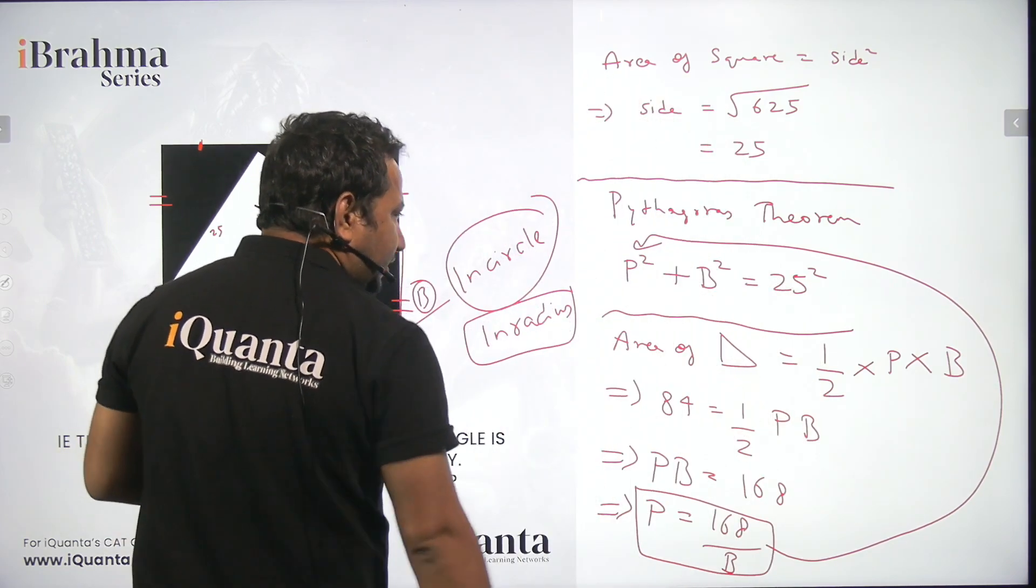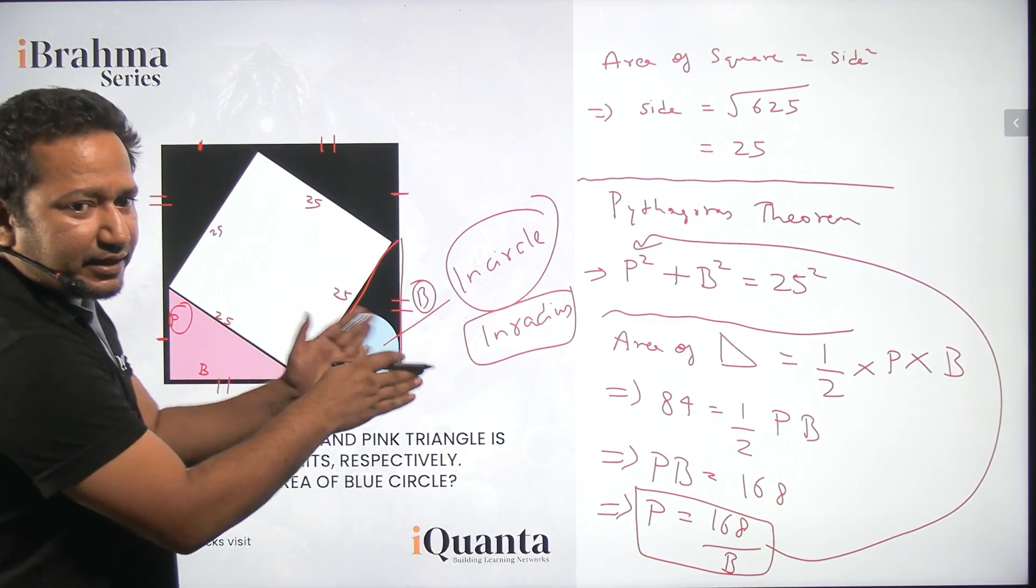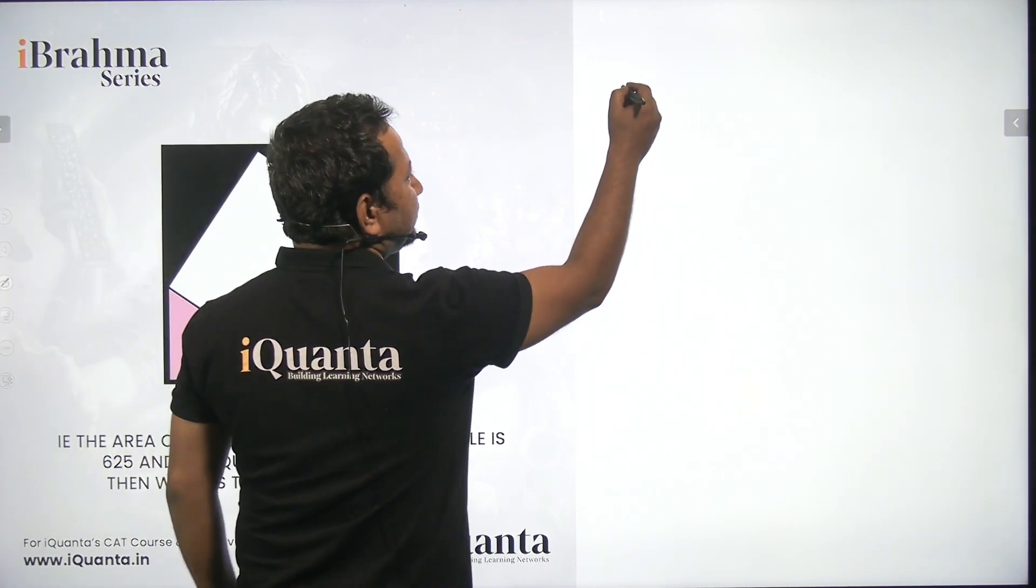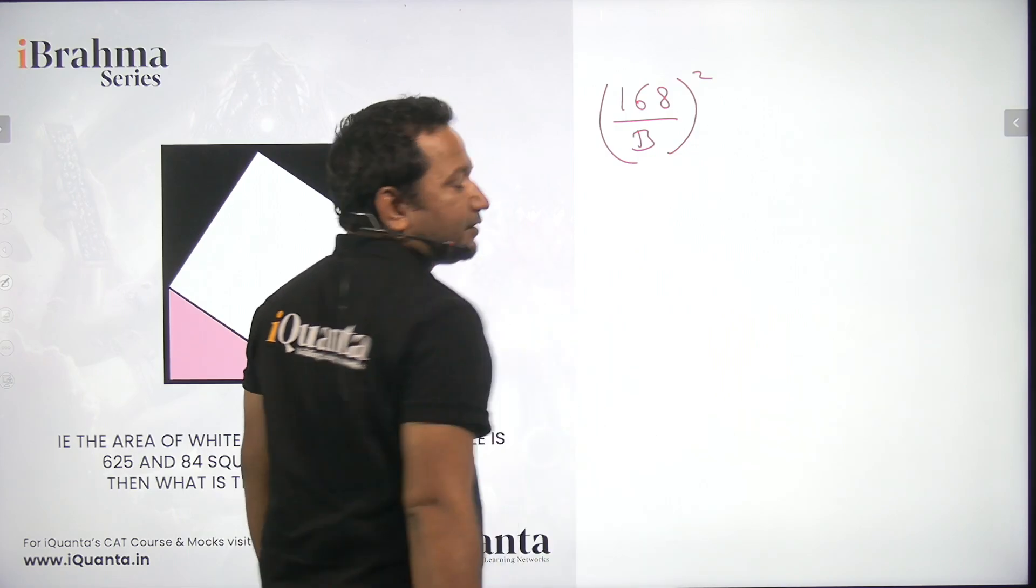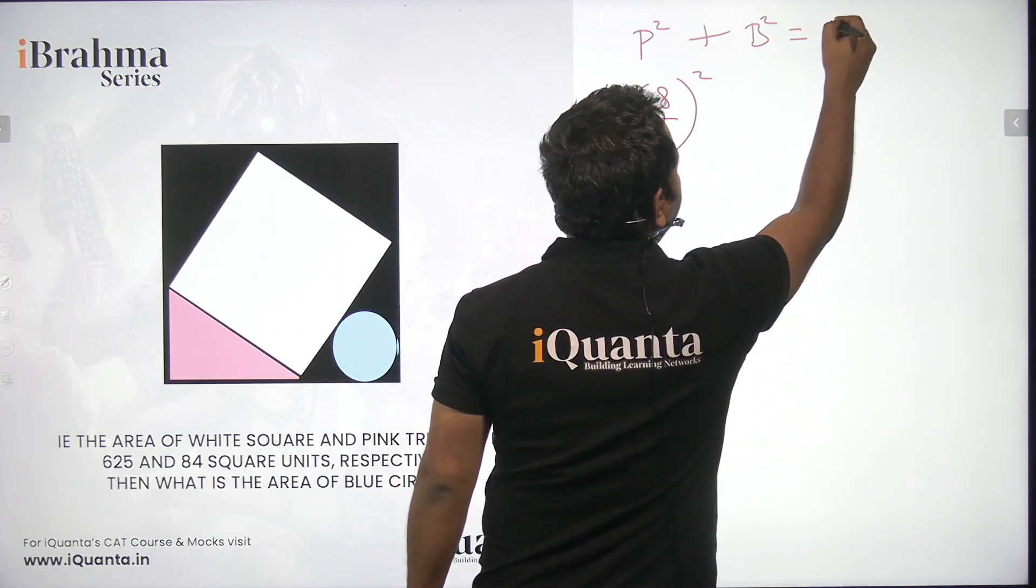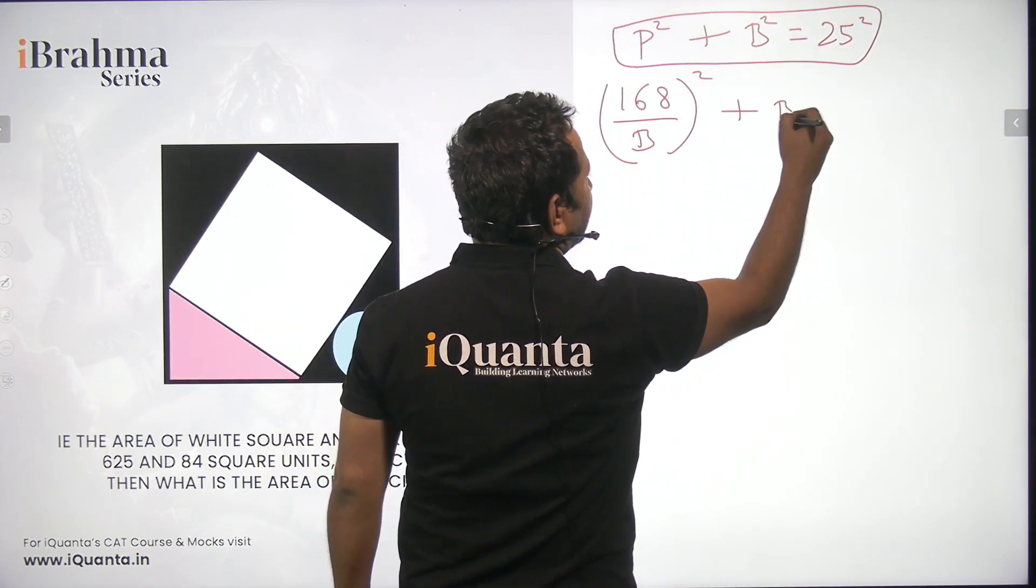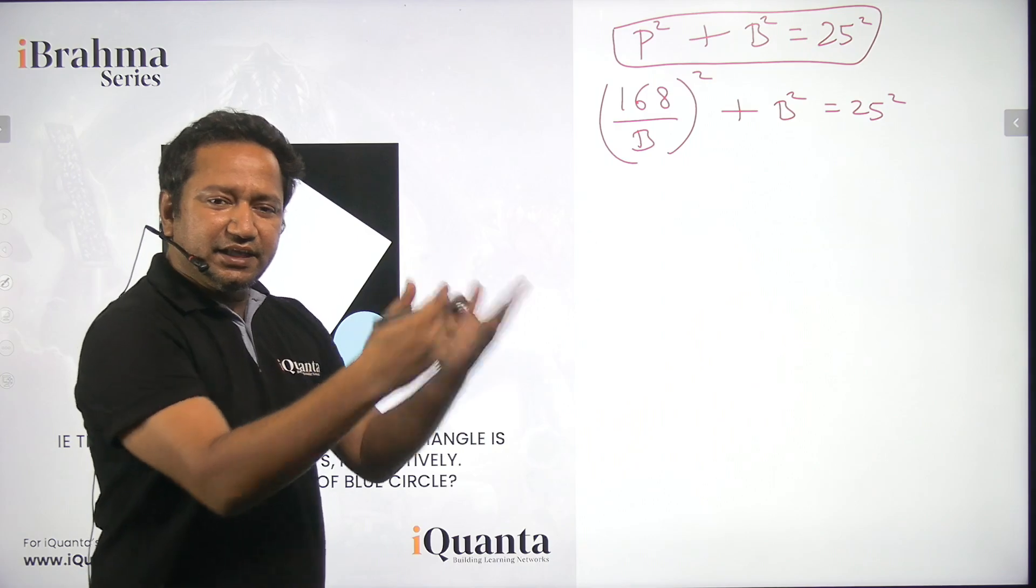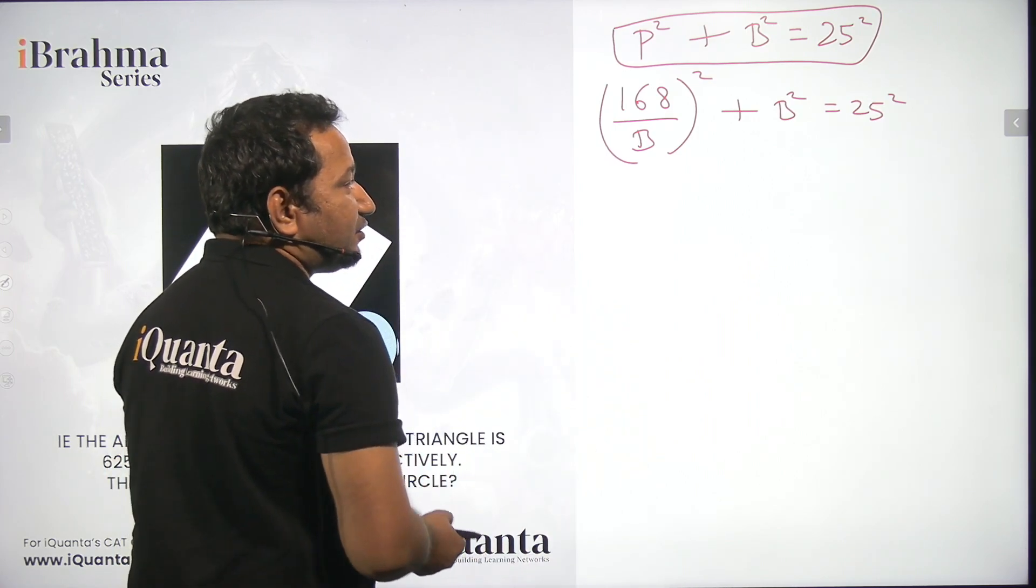So what all things do we have right now? Now we have an equation, the Pythagoras theorem, we have the value of P in terms of B, you can just put it over there and find the value of P and B. So P equals 168 by B from the previous slide. In place of P, we can write this 168 by B. This was the equation for your reference. Plus B squared, that will be equal to 25 squared. Now we can solve for B. Of course, I can expand this and keep on solving, a lot of steps will be there. But I'm sure you can also do that. So once you do that, you'll be able to find the value of B and P.